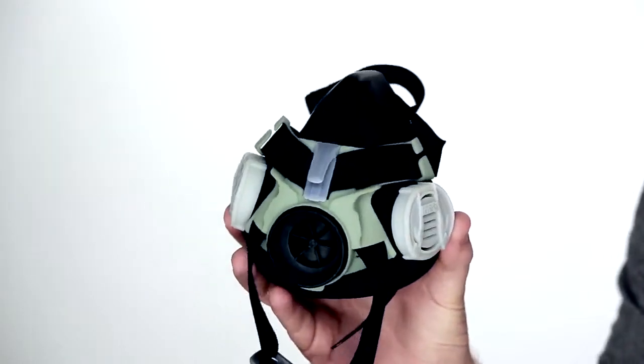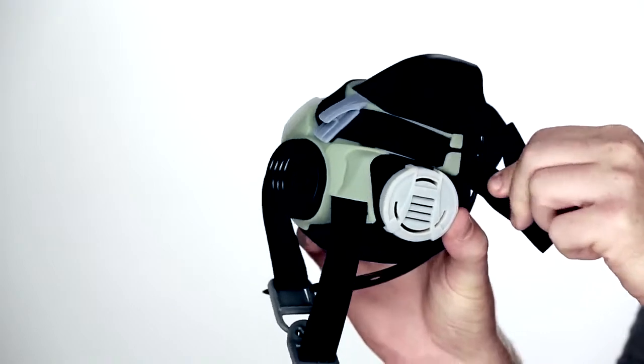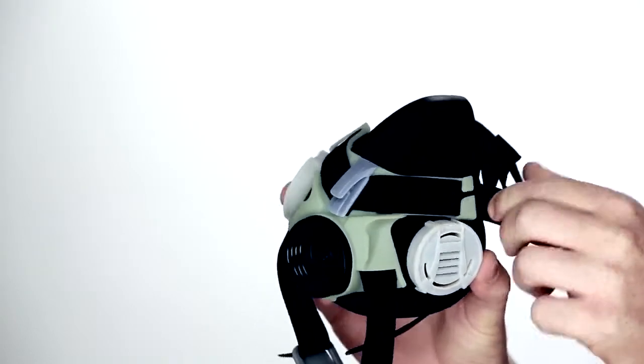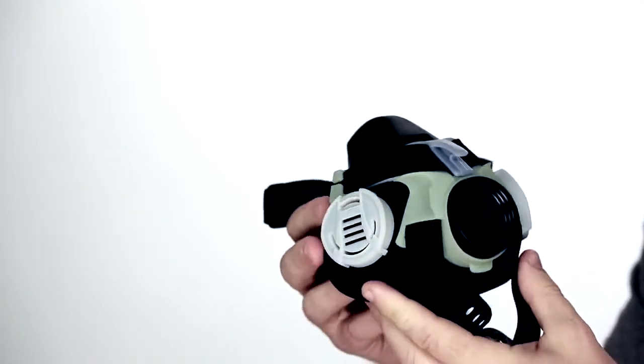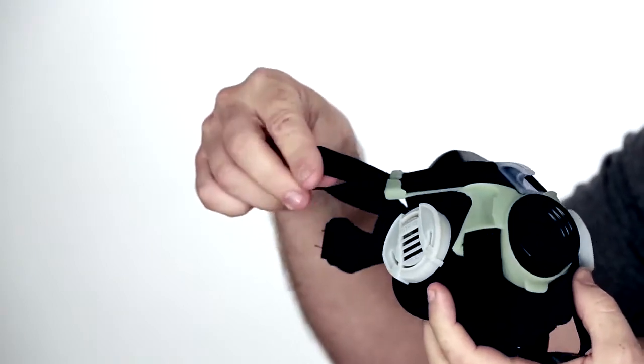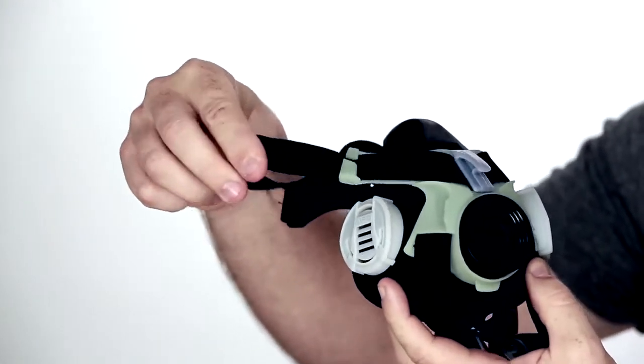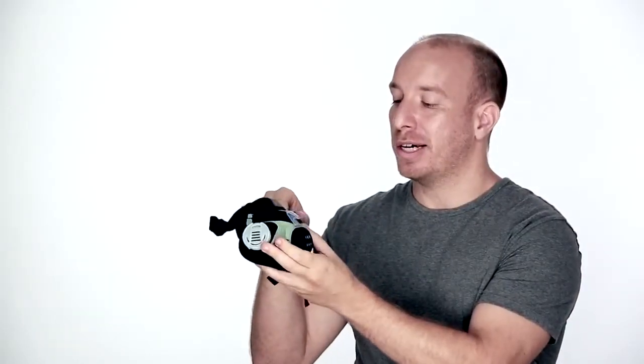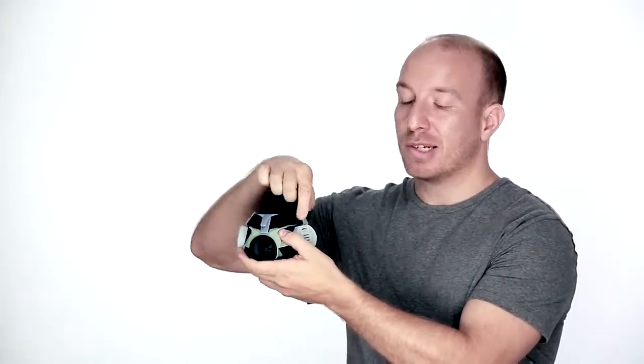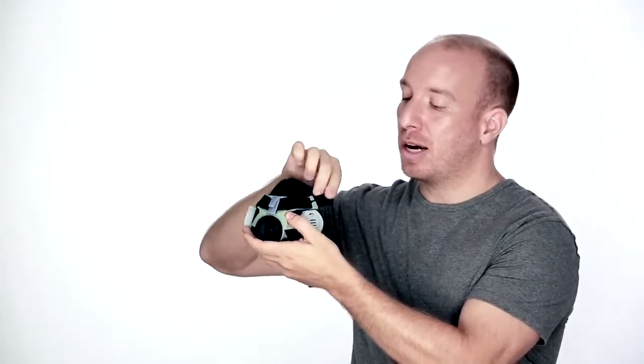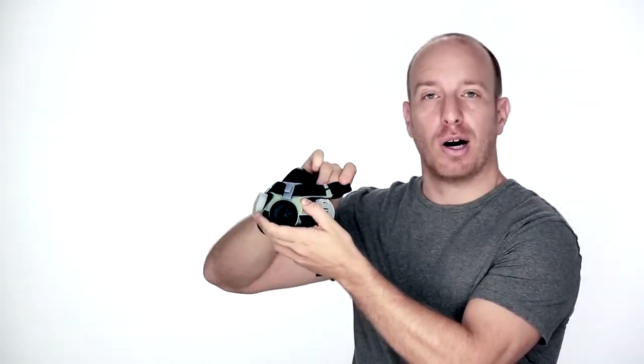Another example from the consumer goods or defense sector. This is a respirator where the digital ABS material has been used at the points where it is required to hold the fasteners, the elastic fasteners in place. This is required here at these small points which you can see. These are quite small and require high toughness.